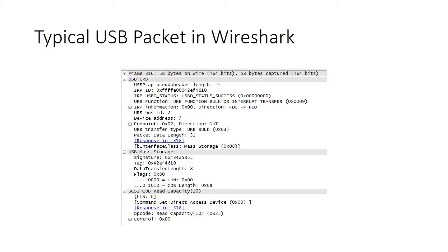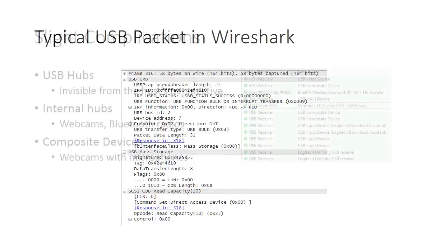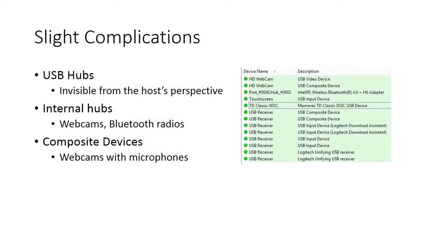With the right tools, all USB traffic is sniffable, and sensitive applications should encrypt this data to avoid reverse engineering. USB communication is complicated by the fact that physical ports do not map to individual devices. The image on the right shows a list of USB devices connected to one of our laptop computers — all those USB receiver devices represent just one Logitech unifying receiver for communicating with a wireless keyboard.